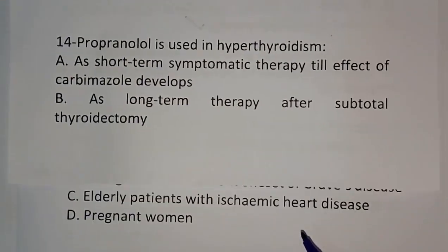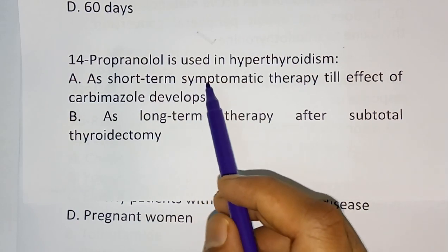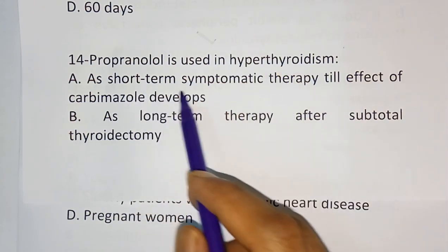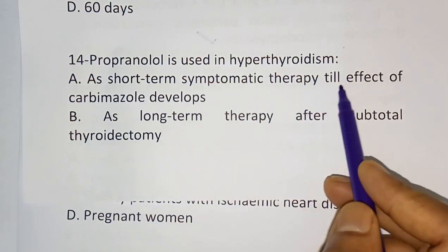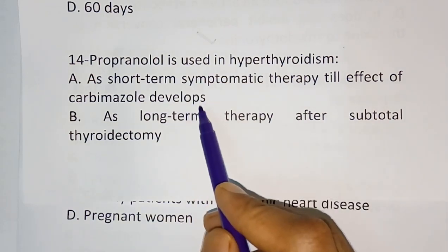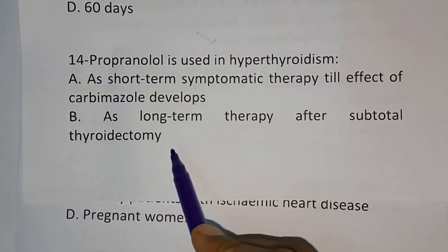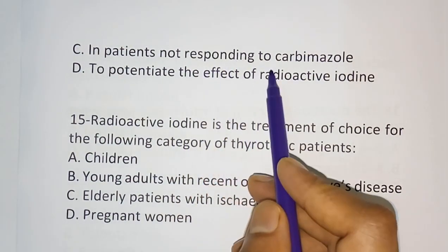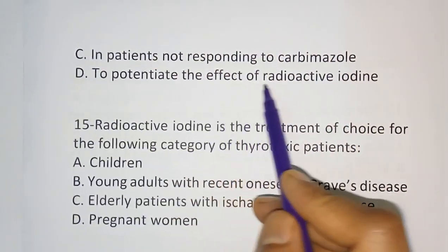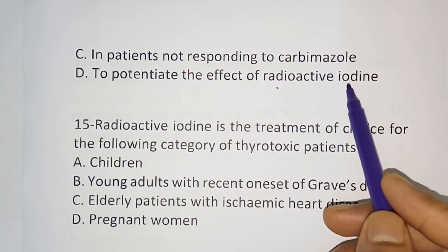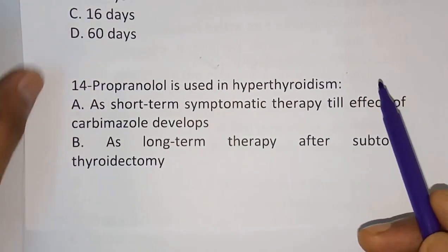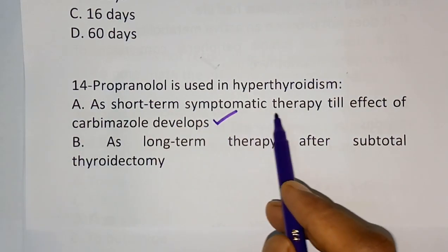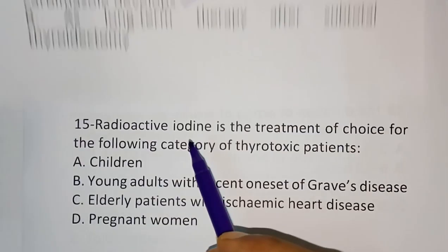Question number fourteen: Propranolol is used in hyperthyroidism — options are: as a short-term symptomatic therapy till the effect of carbimazole develops, as a long-term therapy, after subtotal thyroidectomy, in patients not responding to carbimazole, or to potentiate the effect of radioactive iodine. The correct answer is option A — as a short-term symptomatic therapy till the effect of carbimazole develops.